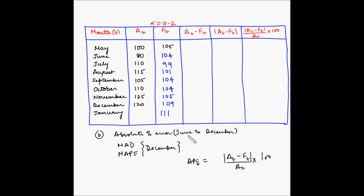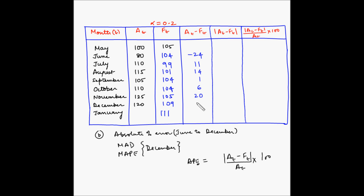Calculating errors (AT minus FT) from June to December: June: 80 minus 104 = -24. July: 110 minus 99 = 11. August: 115 minus 101 = 14. September: 105 minus 104 = 1. October: 110 minus 104 = 6. November: 125 minus 105 = 20. December: 120 minus 109 = 11.